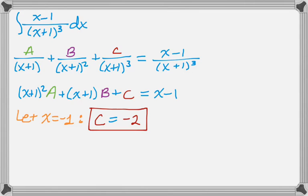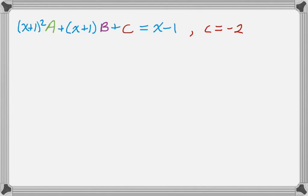So now what I'm going to do is take a look. So I have this, and I also know that c equals negative 2. So really I have x plus 1 squared A, x plus 1 B minus 2 equals x minus 1. What I'm going to do here is I'm actually going to take the derivative of both sides of this with respect to x.